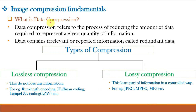What is data compression? The term data compression refers to the process of reducing the amount of data required to represent a given quantity of information. Representations may contain irrelevant or repeated information which is considered redundant data. Compression is a technique which increases efficiency by removing redundancy from representations, and hence representations without redundancy cannot be compressed.